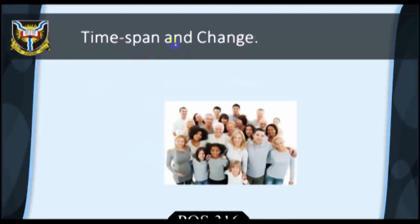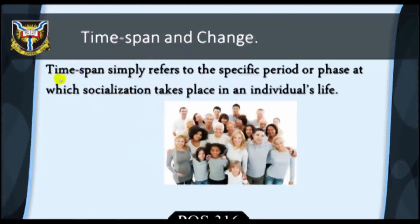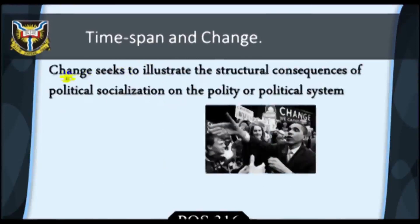Time span and change. We will briefly examine and explain two final analytical categories to differentiate between patterns of Political Socialization: time span and change. Time span simply refers to the specific period or phase at which socialization takes place in an individual's life. The time span of socialization may involve an individual's childhood or formative years, or his adulthood or years of maturity, or both. Political socialization through the primary agency — the family — is not only latent but also most often occurs in the formative years of an individual, while socialization through secondary agencies tends to be manifest and most often occurs during an individual's relatively mature years.